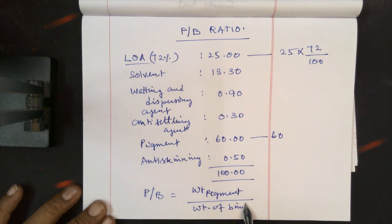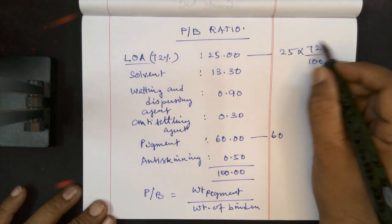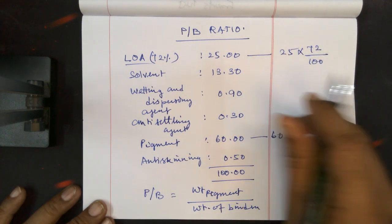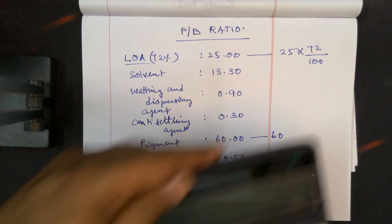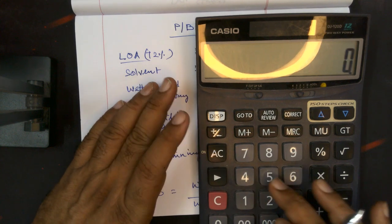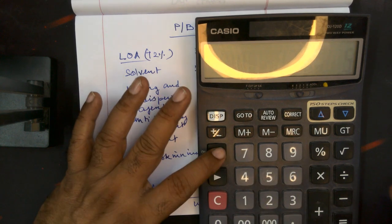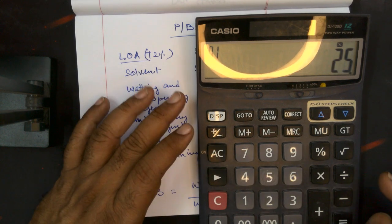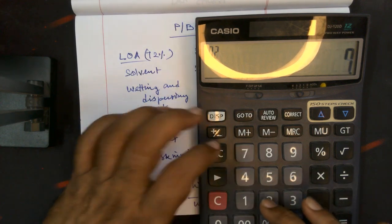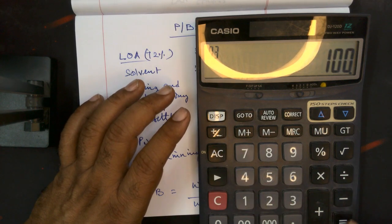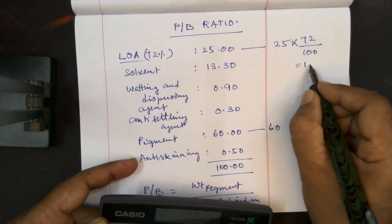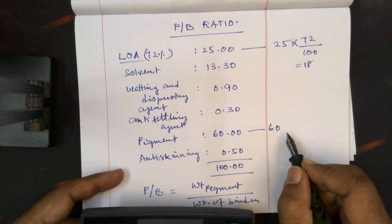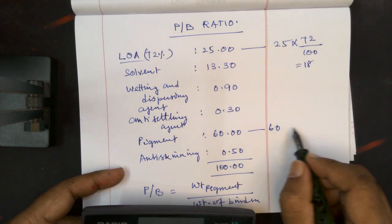Binder as solid. So the weight of binder can be calculated using the solid content. You can use this: 25 into 72 divided by 100, so it means 18. So 18 is the weight of the binder solid content.